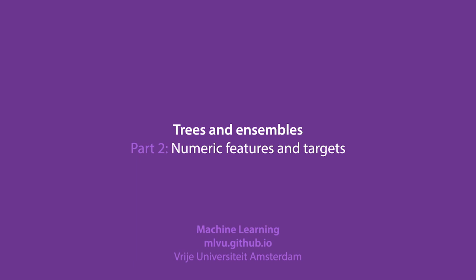In the last video, we saw a training algorithm for decision trees. However, we constrained ourselves to datasets with a classification target and purely categorical features. In this video, we'll extend our view and start with what to do when your features are numeric.